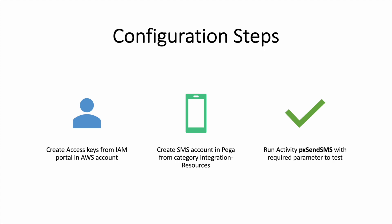To recap: we created access keys in the AWS IAM portal, then created an SMS account in Pega providing three details — access key, secret code, and sender ID — and then ran the activity pxSendSMS with required parameters and it worked. This is a very simple use case, you can try it and let me know if it's not working and I can help. Thank you very much, have a good day, bye!